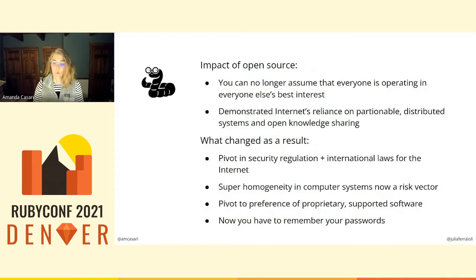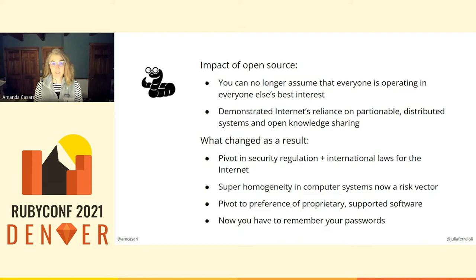So why does this one event matter to open source, and how is it a black swan event? Using our magical glasses of hindsight, we can clearly see where the status quo changed and the influences in how we operate today. First of all, we no longer assume that everyone is operating in everyone else's best interest. This event happened in November 1988 — just months before GPL and Linux were released for the first time. We cannot ignore the human interest, community expectations, and social trust that existed at the time of these releases, all of which were fundamentally impacted by the Morris worm just months before.